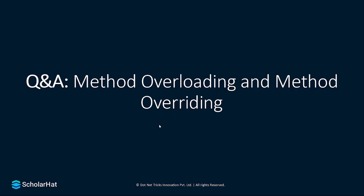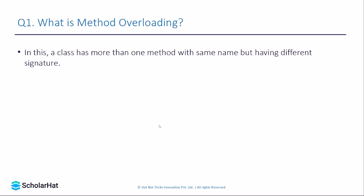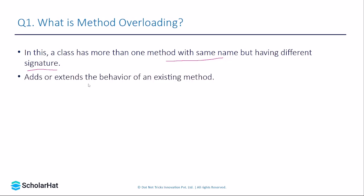Our next section is method overloading and method overriding. Method overloading is when a class has more than one method with the same name but having a different signature. By different signature, I mean it has different parameters — it adds or extends the behavior of an existing method.